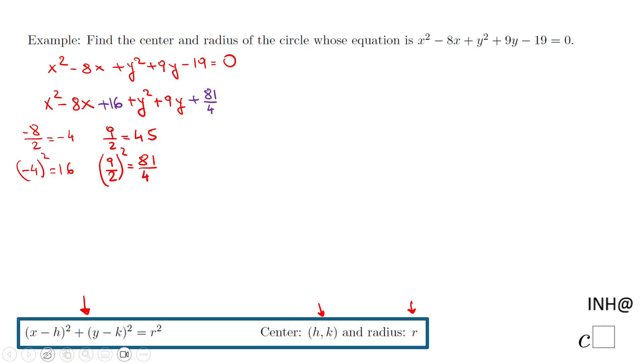Okay, and then I'm gonna say -19 = 0, and now we're gonna add these two numbers we had in the left side on the right side which are 16 and 81/4. And now these two gentlemen we have here are perfect squares. Why? Because we complete the square.